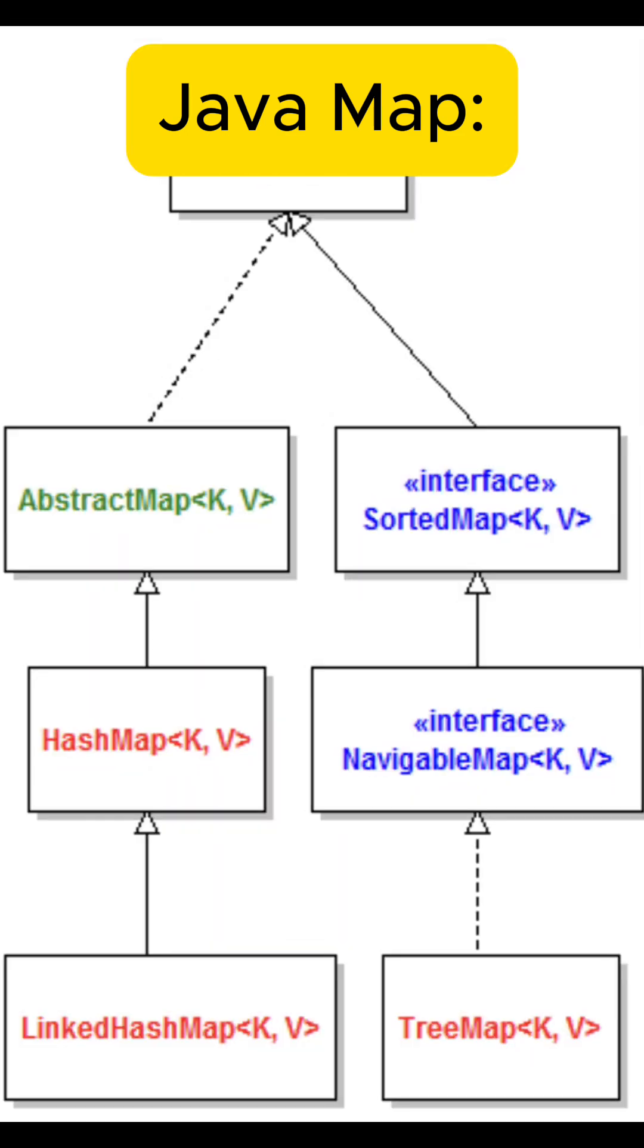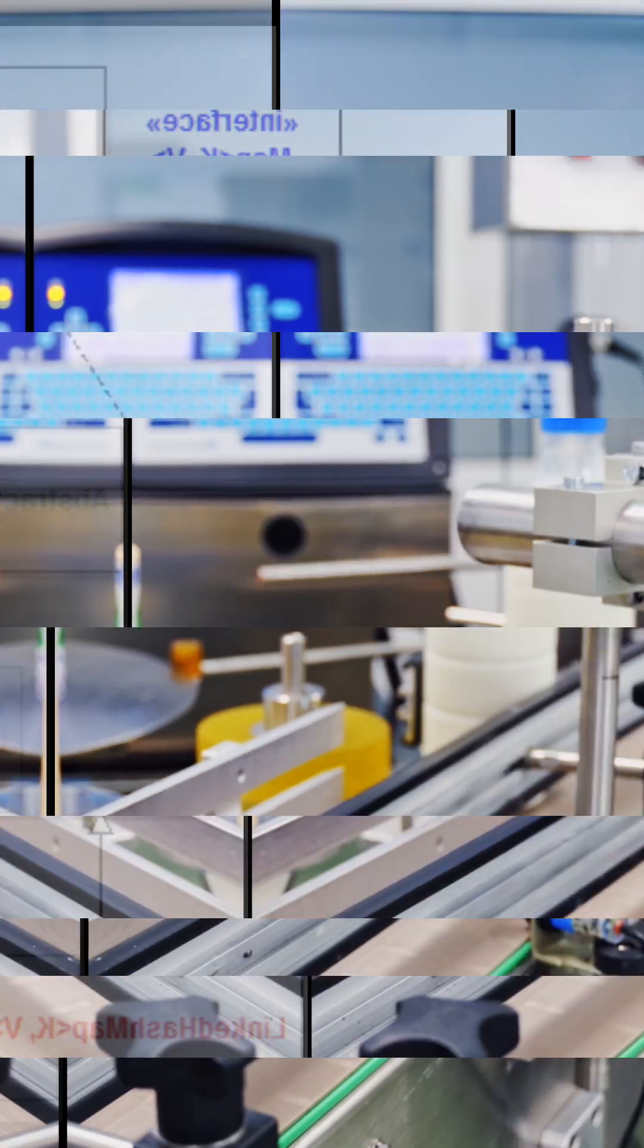Common map implementations are HashMap, TreeMap, and LinkedHashMap.